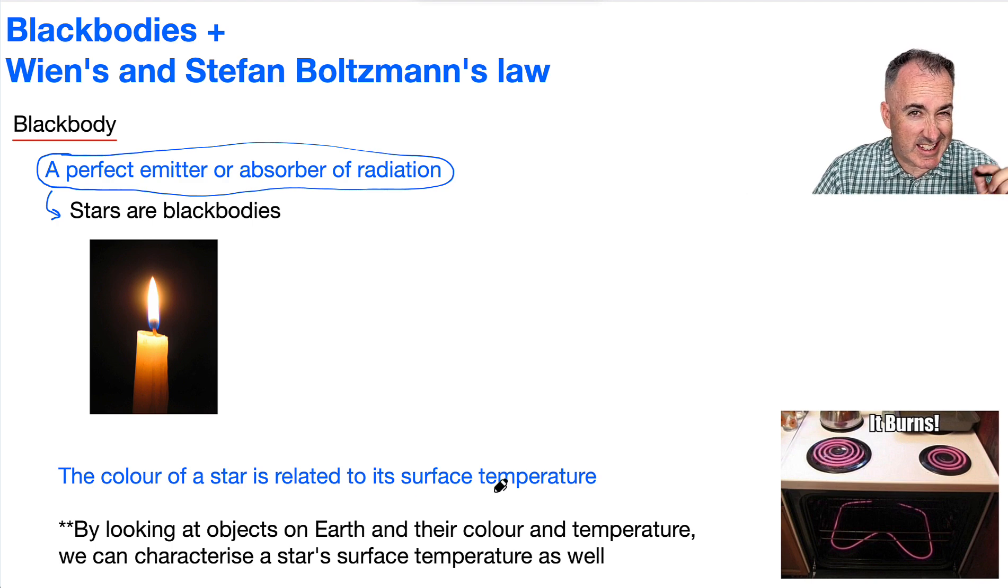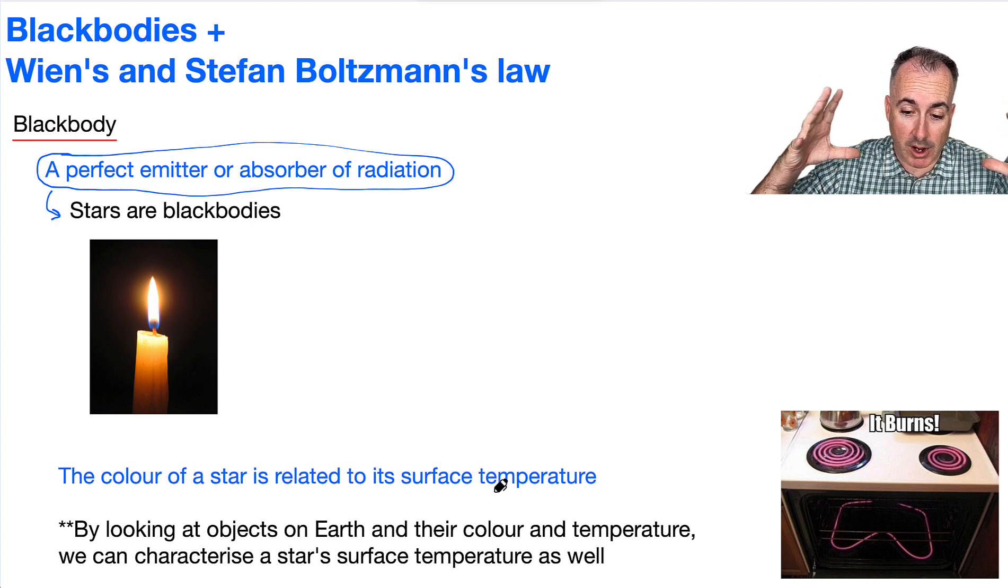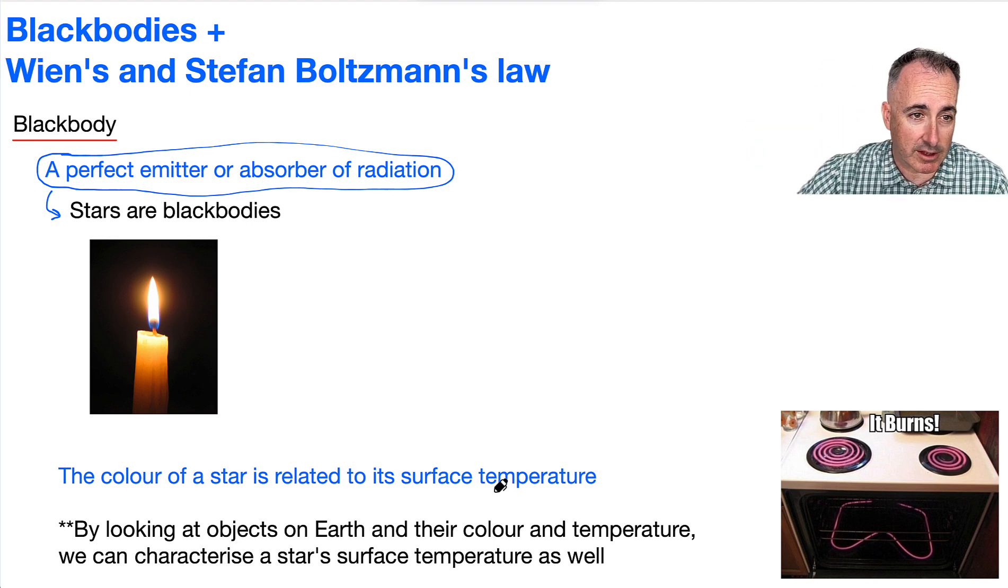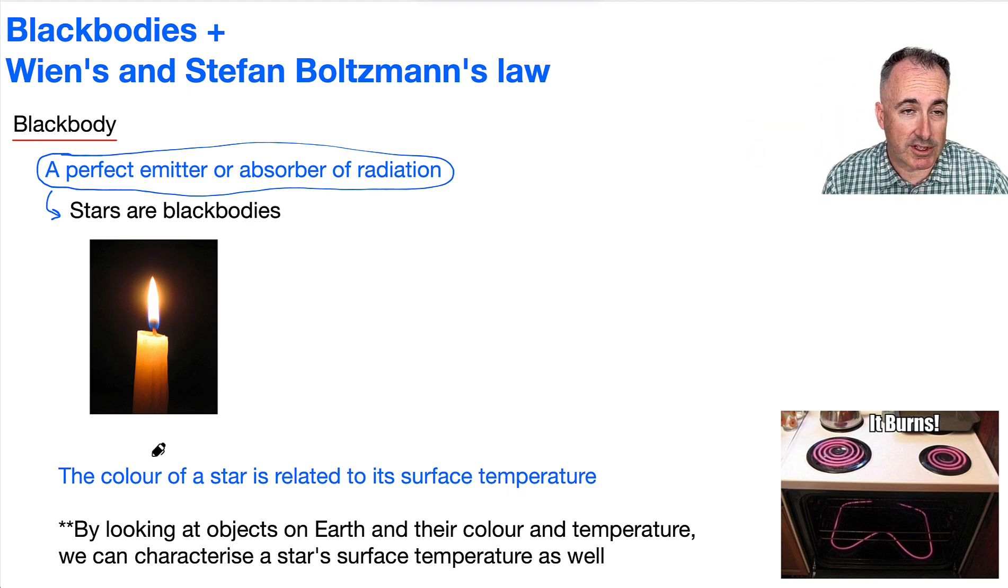That doesn't tell us the center temperature of the star, but it does tell us at least, hey, a blackbody that was heated to this temperature would have this same characteristic wavelength. So the color of a star is related to its surface temperature.